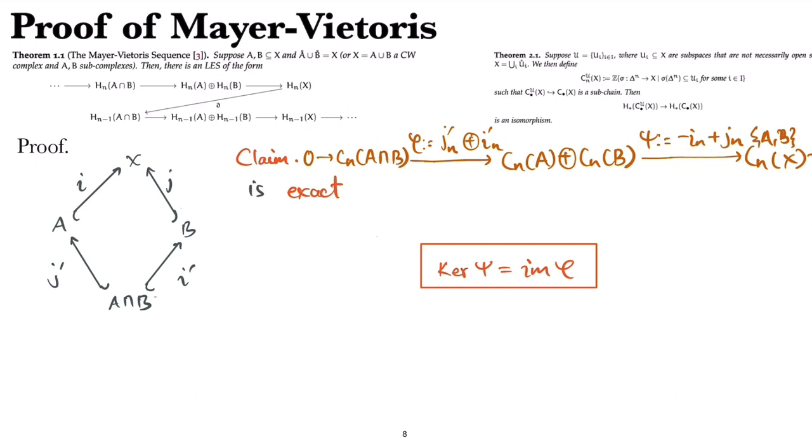To see that the kernel of this map is zero, anything zero here in the direct sum must be zero in A and zero in B. If something is zero in A and B, it must be zero in A intersection B. To see that this map is surjective, any chain here is a combination of chains only in A and chains landing only in B. That is precisely what we can obtain from the direct sum as well.